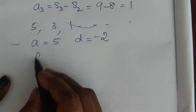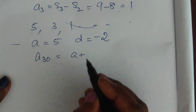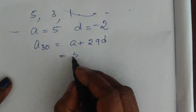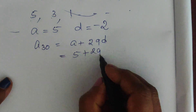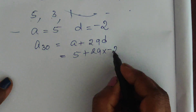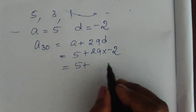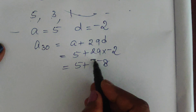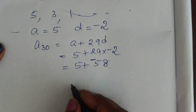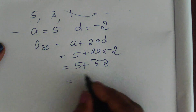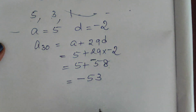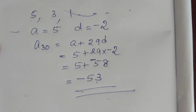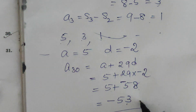The 30th term: a30 = a + 29d = 5 + 29×(-2) = 5 - 58 = -53. So the 30th term of the given AP is -53.